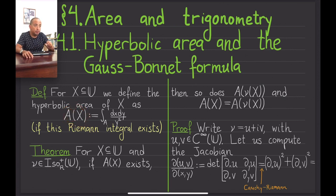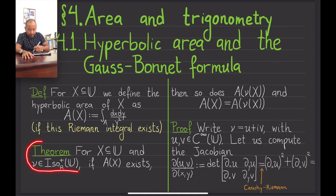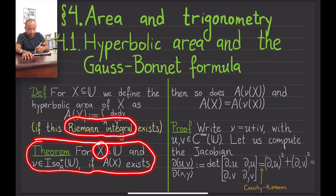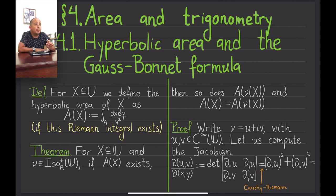One of the first things we would like is that whatever our definition of area is, it should be invariant under isometries — specifically under orientation-preserving isometries. This is the first property we establish: if the area of a subset exists, meaning this Riemann integral really exists, and we take an orientation-preserving isometry, then the area of the image under that isometry exists and equals the area of the original set.